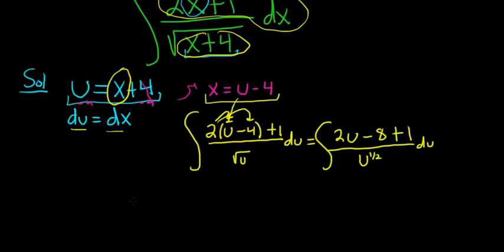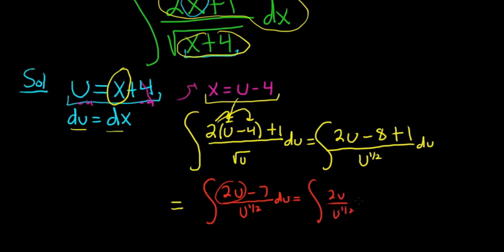So this is equal to the indefinite integral of 2u minus 7. Negative 8 plus 1 is negative 7 over u to the 1 half du. And now we'll break it up. It'll be 2u over u to the 1 half minus 7 over u to the 1 half du.